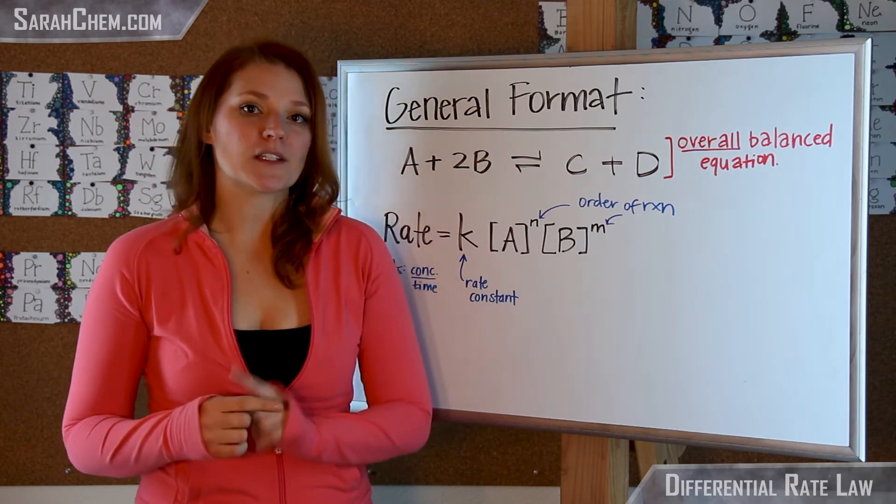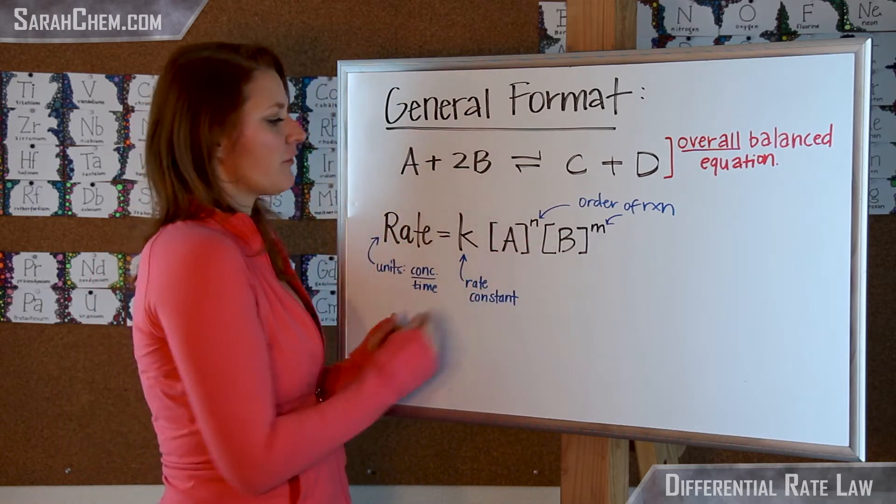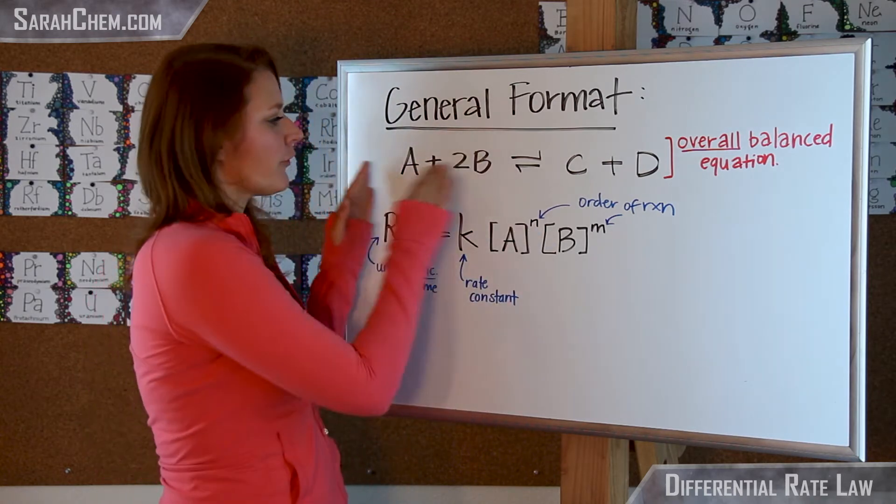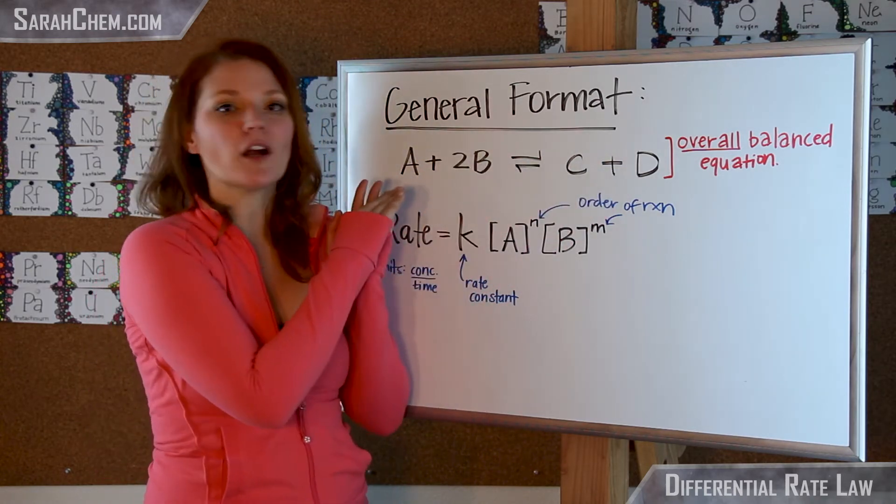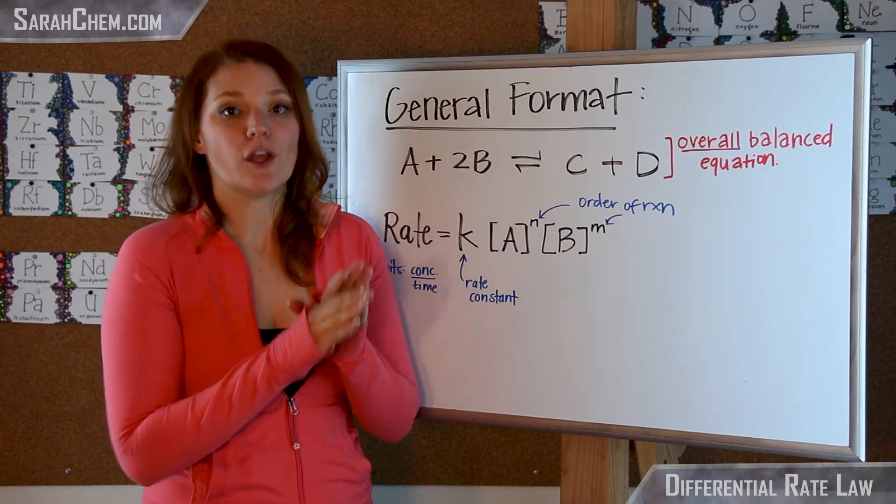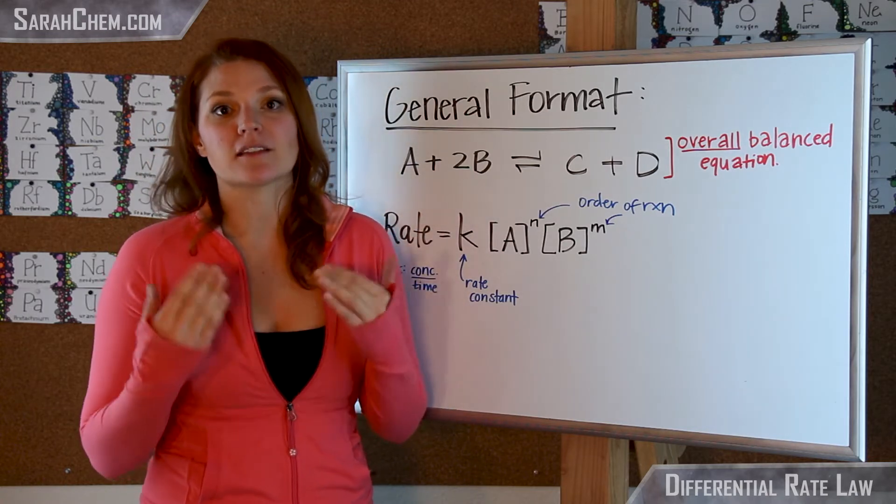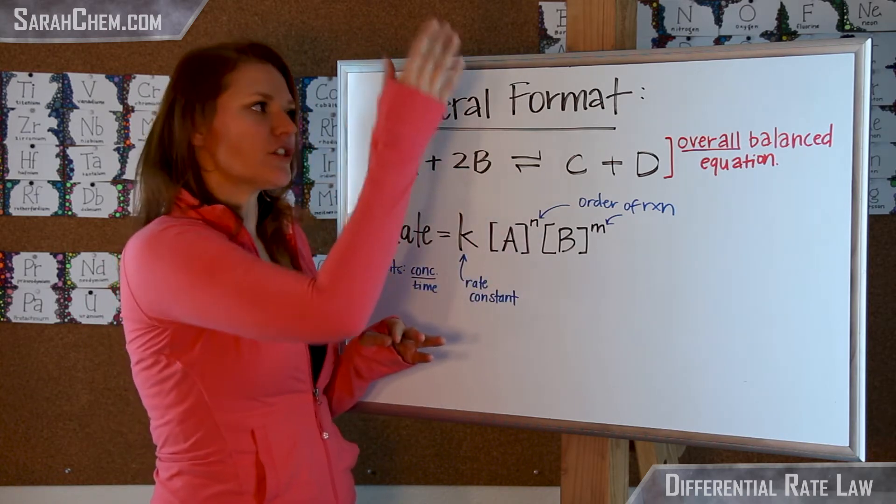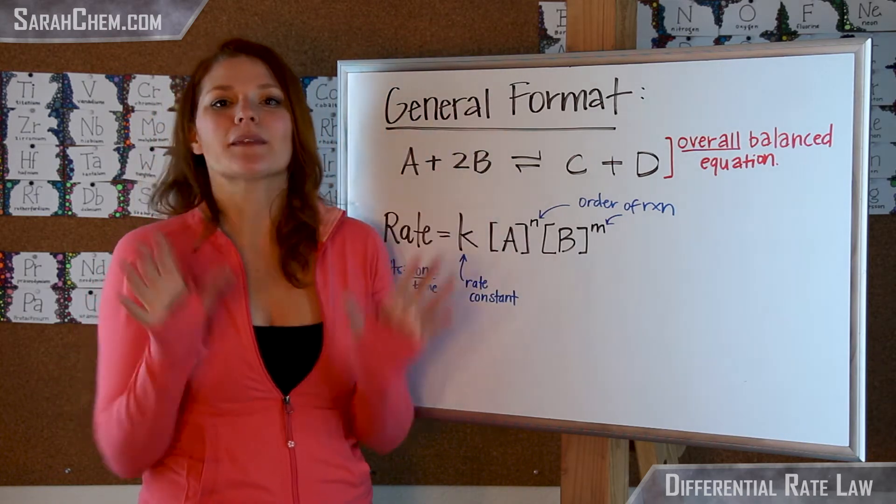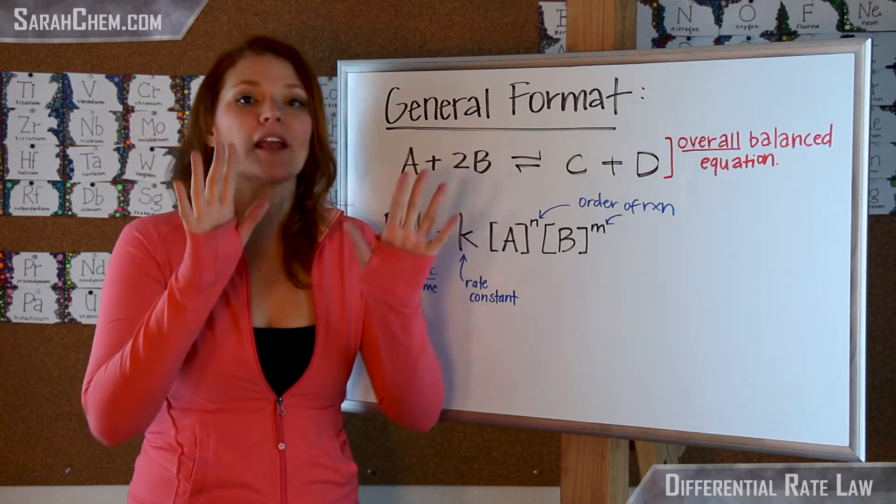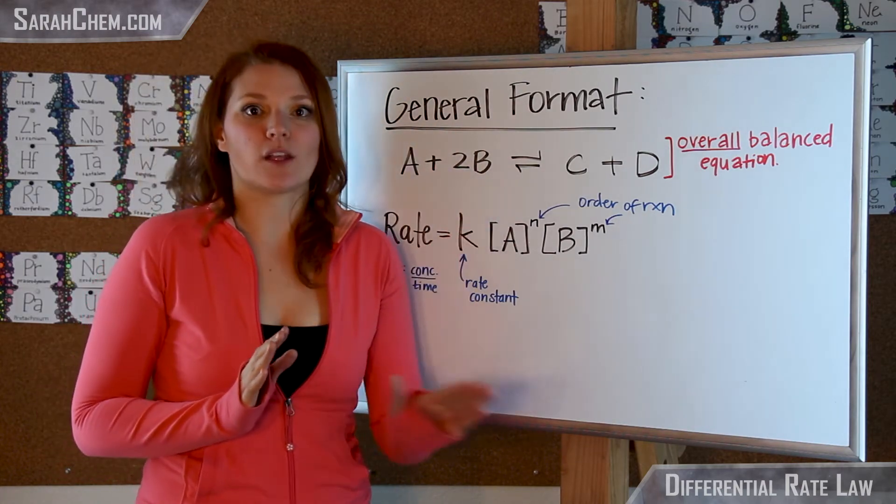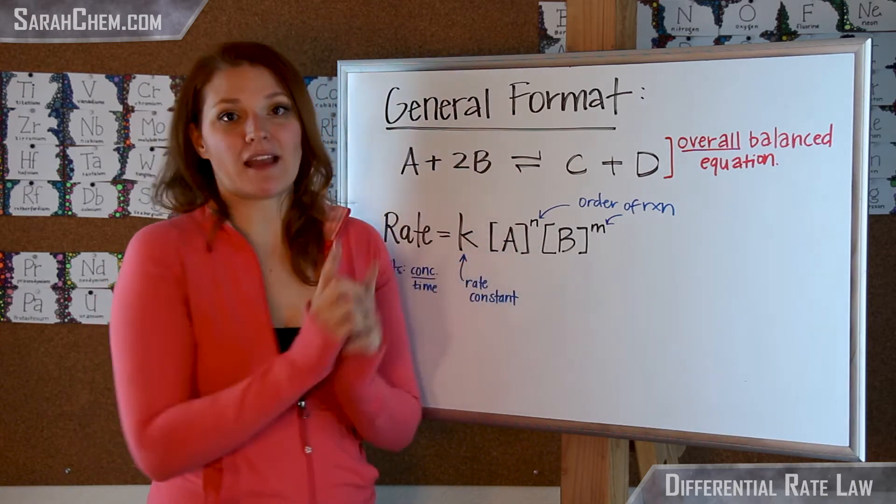Now the first thing you want to know about the differential rate law is if you wanted to actually fill in the blank for what is n and what is m, you cannot get it from this equation over here. The overall balanced equation does not give it to you. You'd have to get it from experimental data. So that would mean then you'd get in these kinds of questions two columns essentially that give you some data. And from that data, you're able to go ahead and calculate what the value of n and what the value of m are for each of our reactants.